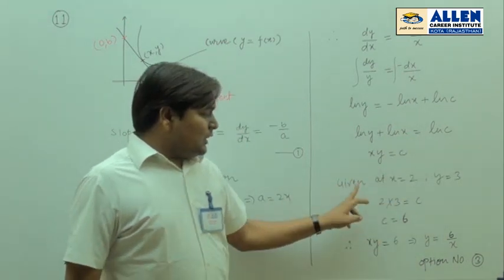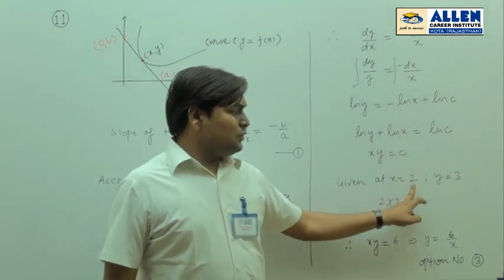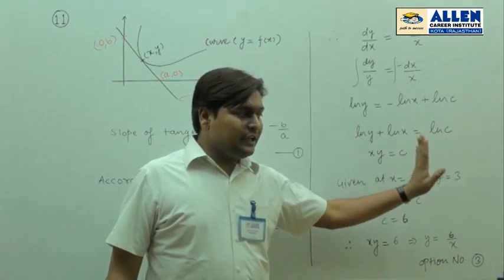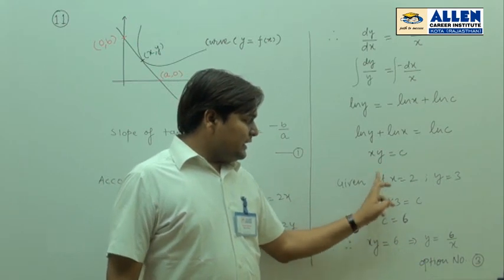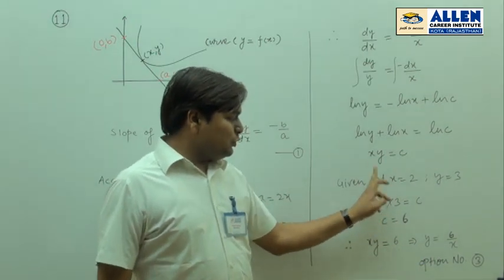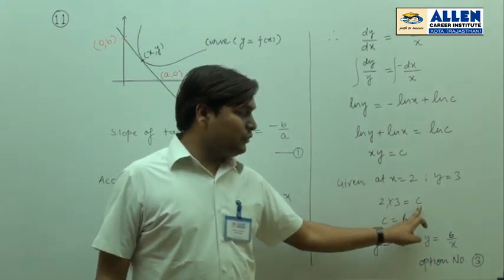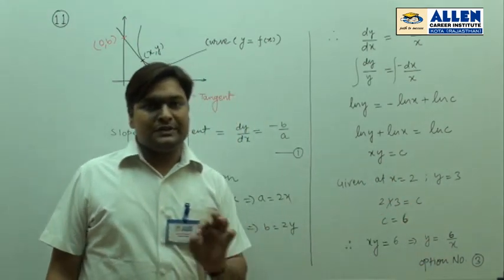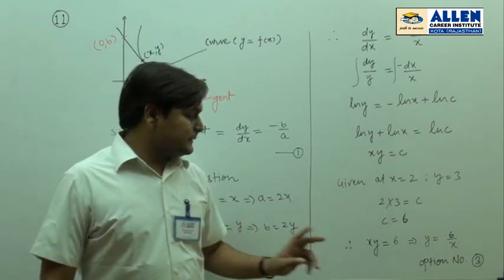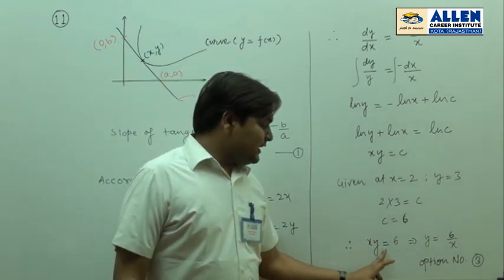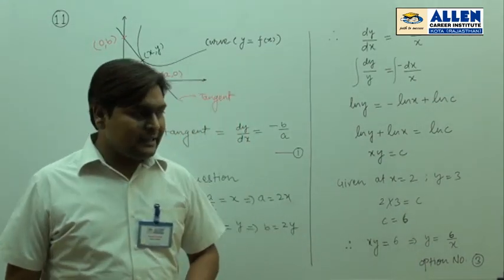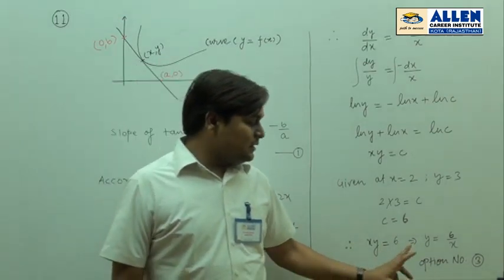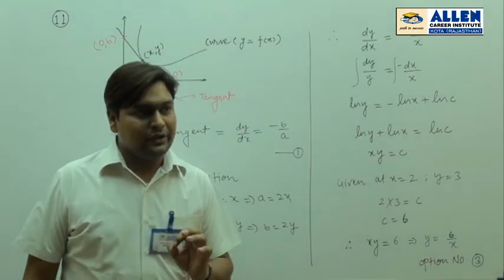In this question, it is given that at x = 2, y = 3. Therefore, substituting x = 2 and y = 3 into xy = c, we get c = 6. So xy = 6, which gives y = 6/x. Hence option number 3 is absolutely correct.